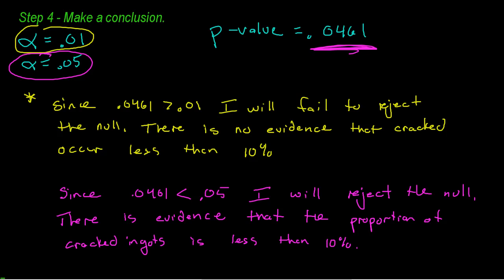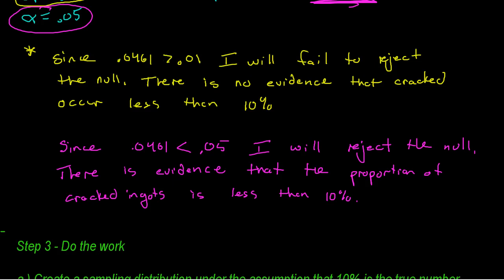A lot of AP questions will tell you ahead of time what alpha level to use so you can't end up with two different answers. In this example, I didn't tell you what alpha level to choose. Most people do go with one of these two values. In a situation like this, you can have two different answers.